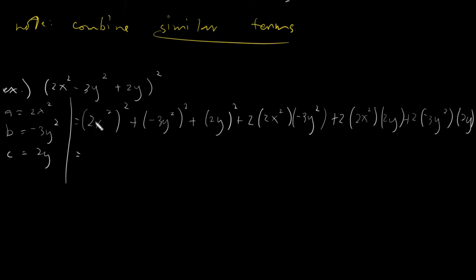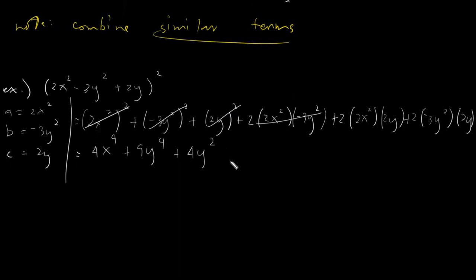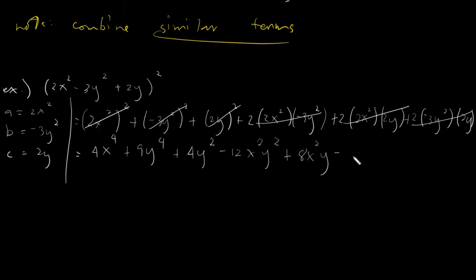Evaluating: (2X²)² gives 4X⁴. (−3Y²)² gives 9Y⁴. (2Y)² gives plus 4Y². Twice times 2 times negative 3 gives negative 12X²Y². This one gives plus 8X²Y. And lastly, this gives minus 12Y³. Checking the given, there are no similar terms — therefore this would be our final answer. If there are no similar terms, that would be your final answer.